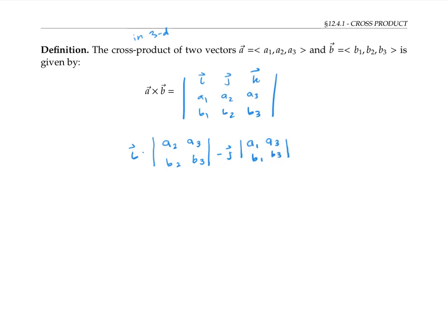Finally, we add the vector k times the determinant of the sub-matrix a1, a2, b1, b2, that we would get by crossing off the row and column that k is in. Notice that the positive and negative signs alternate: plus i, minus j, plus k.